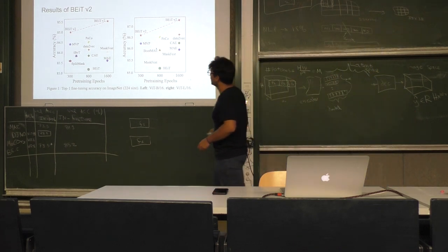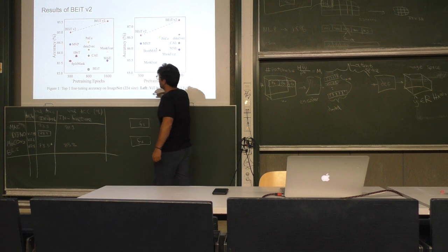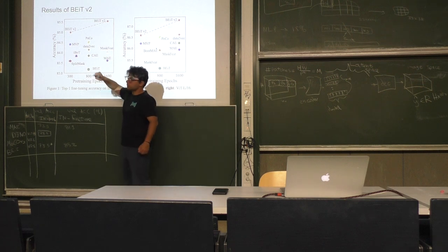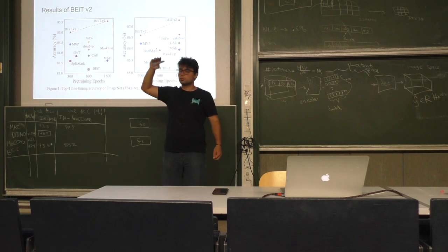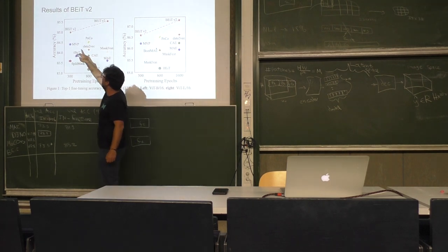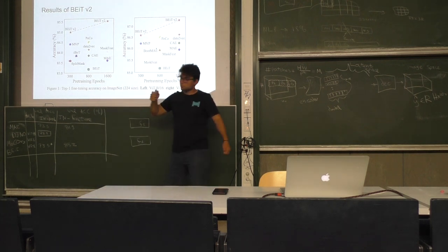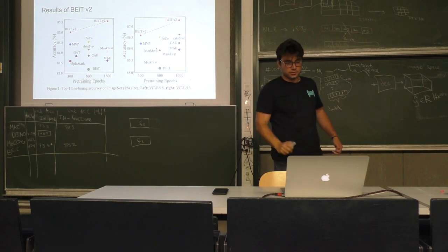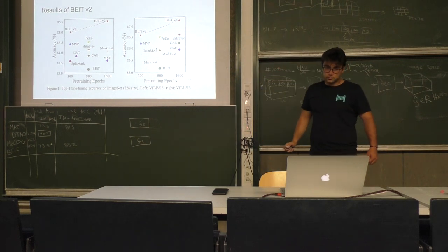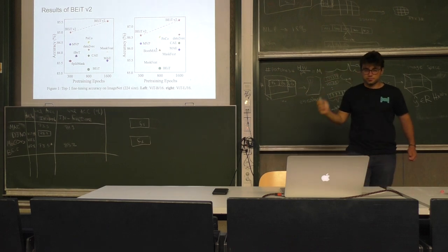The masked autoencoder approach is that this comparison is only for ViT-base, while the masked autoencoder you can even scale it to ViT-base, ViT-large, ViT-huge. The masked autoencoder is much easier to scale to very, very big models, which is a significant advantage if you have a tremendous amount of data available.